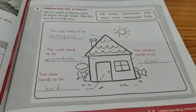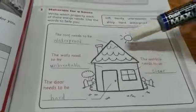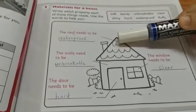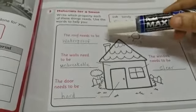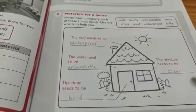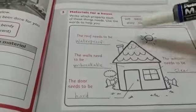Hi children, open your workbook to page number 25. You can see here a picture of a house, and from this house we are going to discuss different properties of different materials.